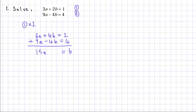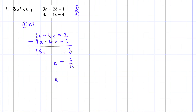Now I can solve for a. I have 15a equals 6. Dividing both sides by 15 gives a equals 6 over 15, which simplifies to a equals 2 over 5.